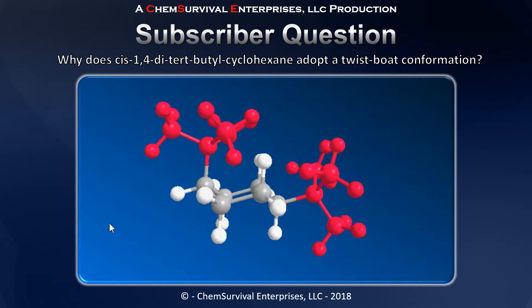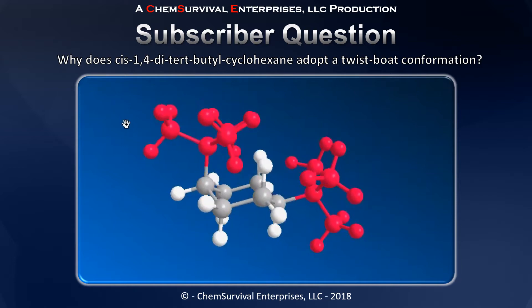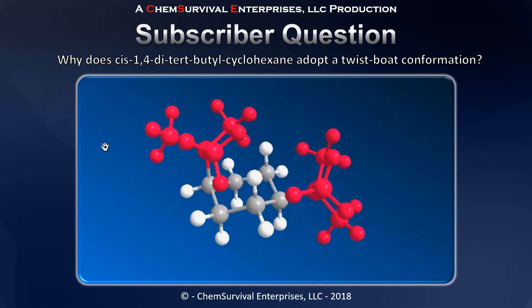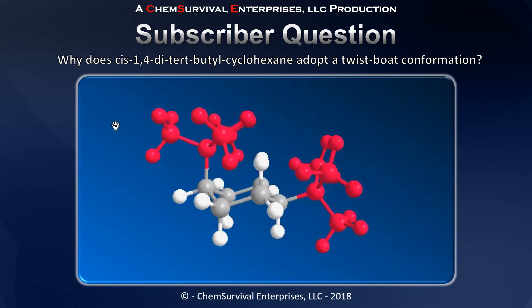In this chair conformation you'll notice that one of those large t-butyl groups is in a steric clash with these two axial hydrogens. We call these 1,3-diaxial interactions, and if I grab the molecule and give it a tilt you can see a bit better how close they really are. This interaction is a very energetically disfavored interaction.